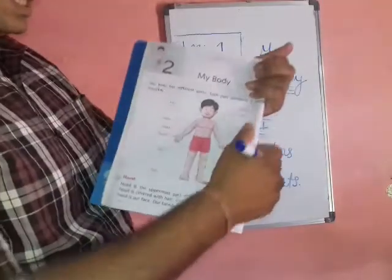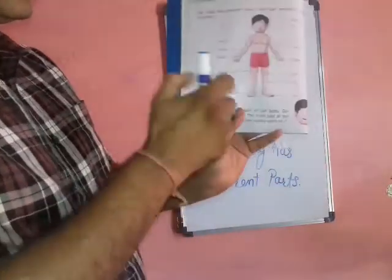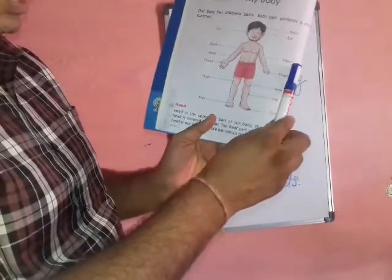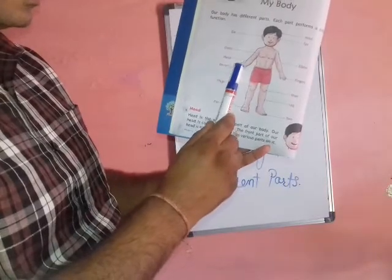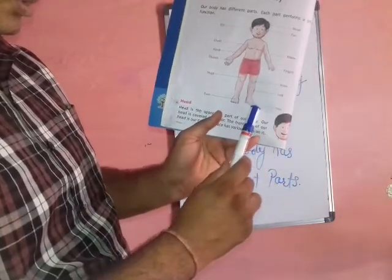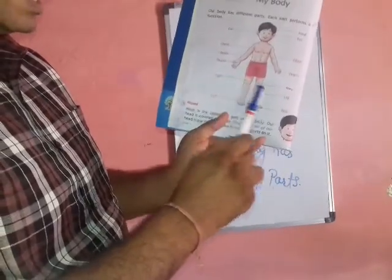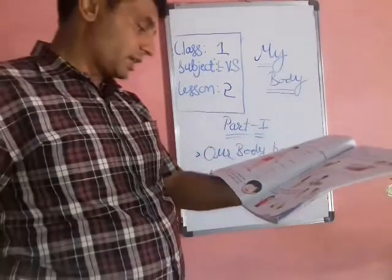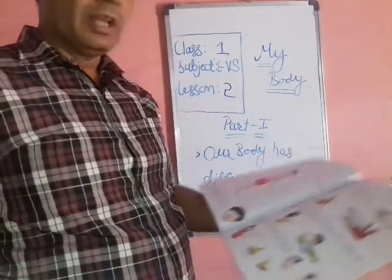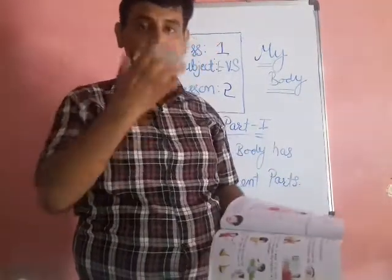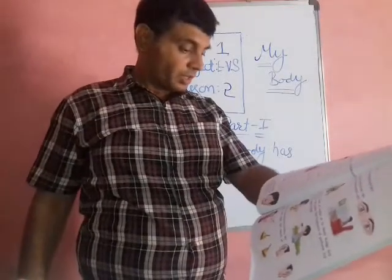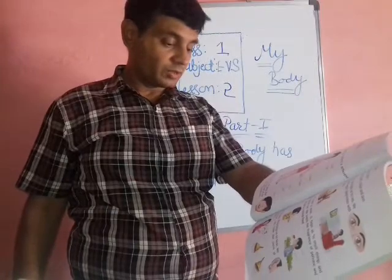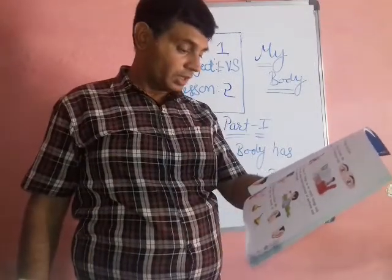Let's think about parts of the body. The head is the uppermost part of our body. Part of our head is our face. Our face has various parts.